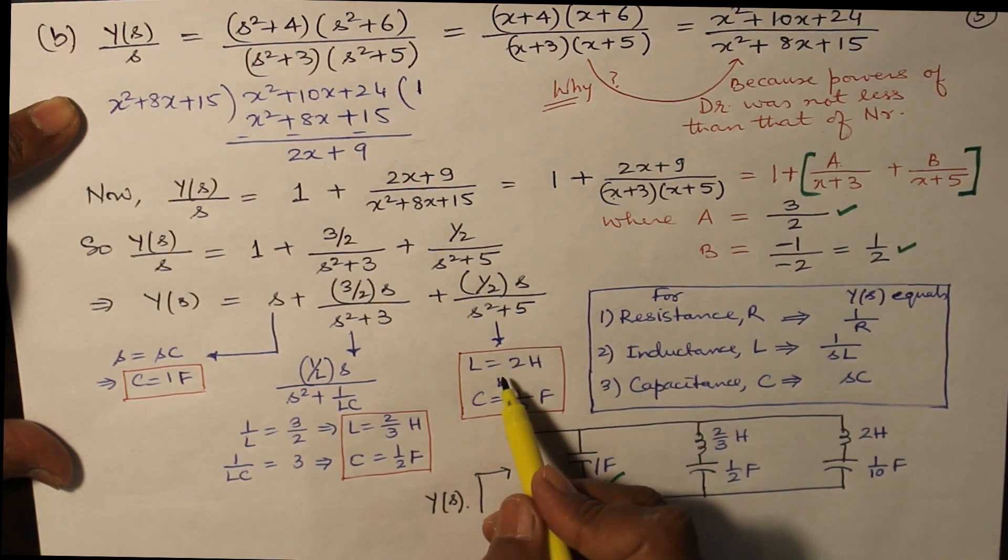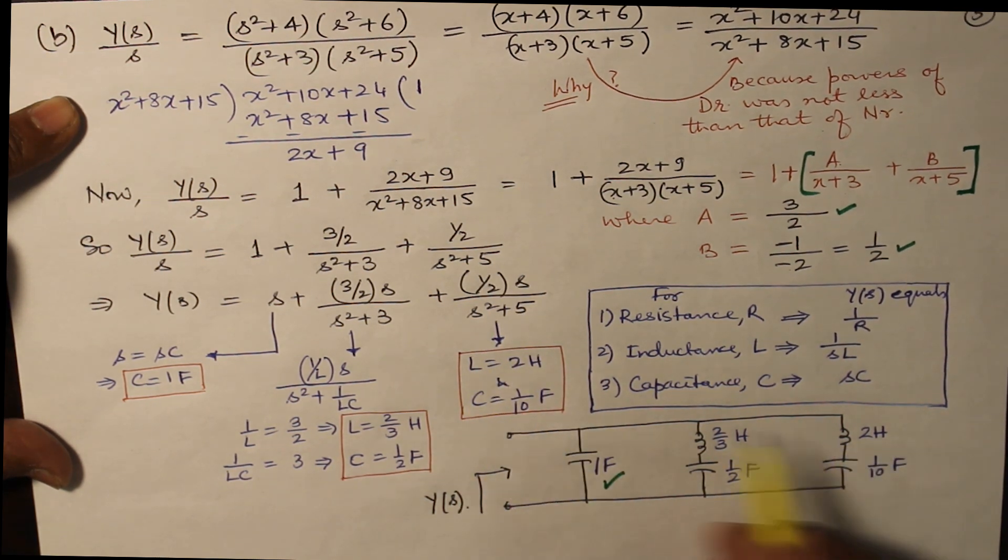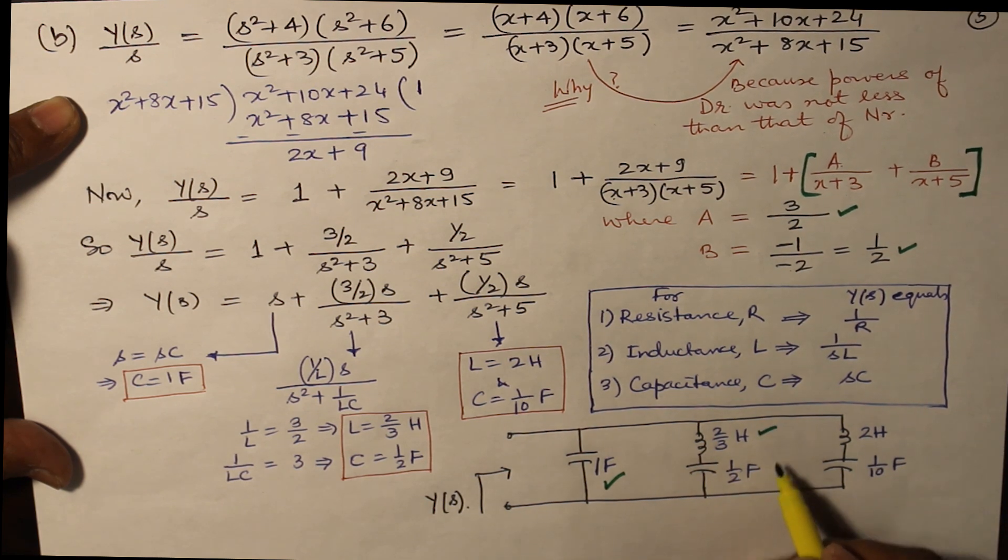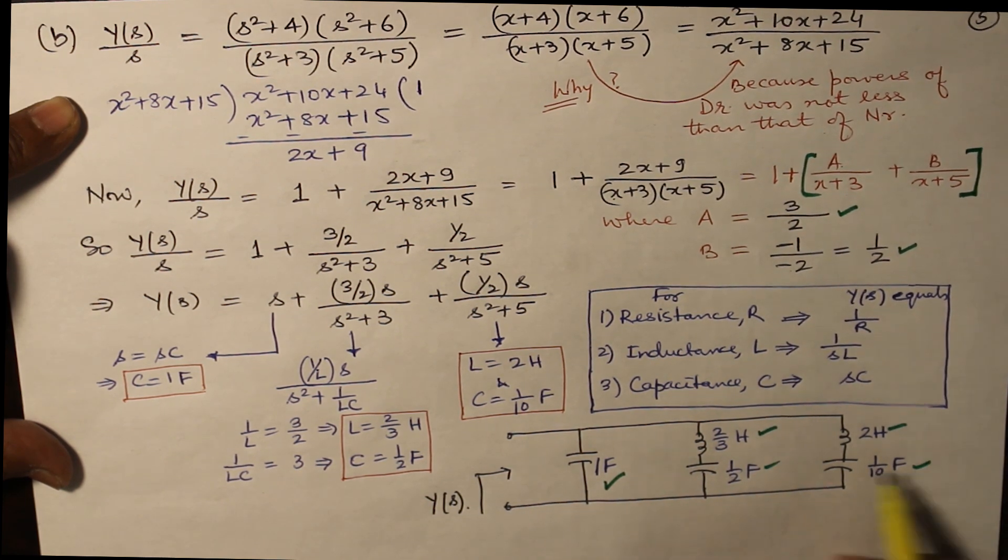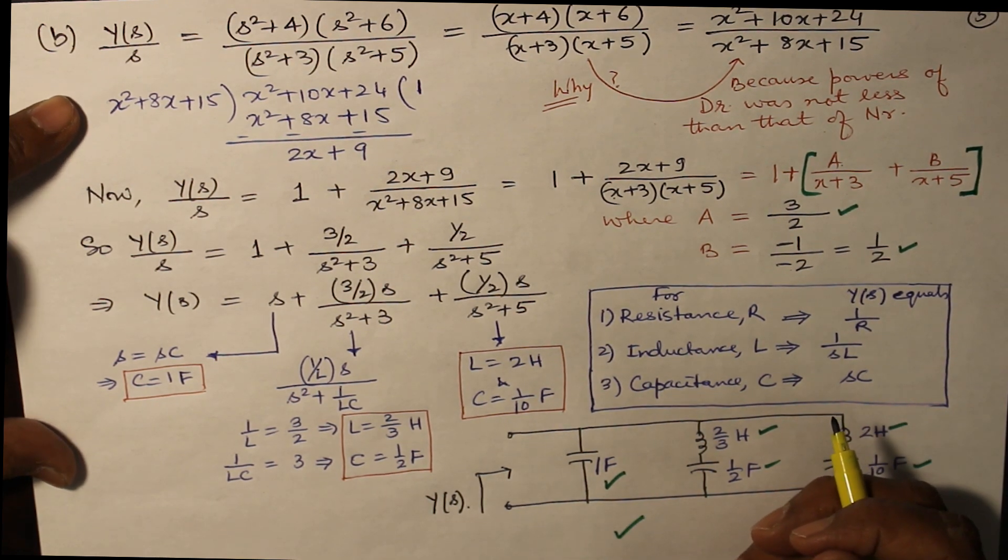Similarly, this is a series combination. This Y(s) value. And L comes out to be 2 henry and C comes out to be 1/10 farad. All these branches are in parallel, and you get another 6.5 marks.